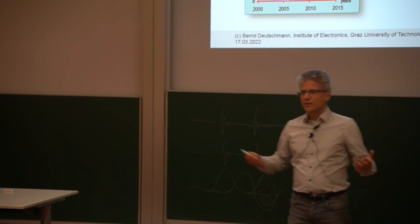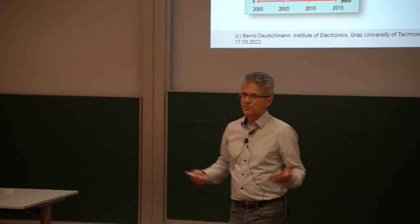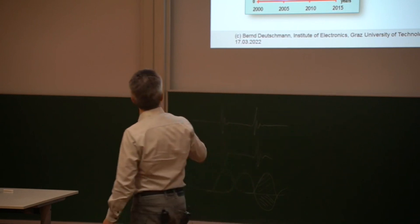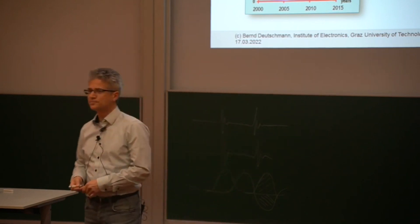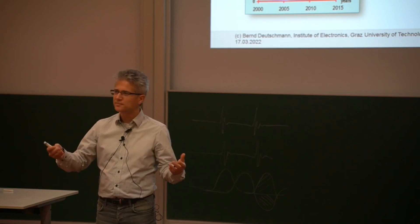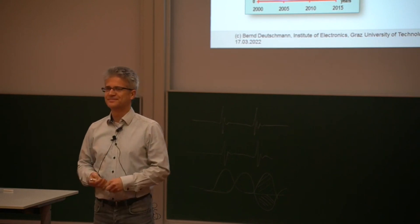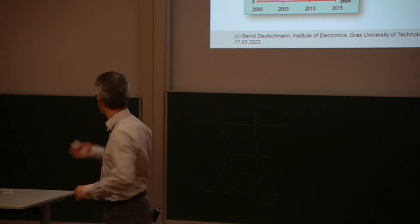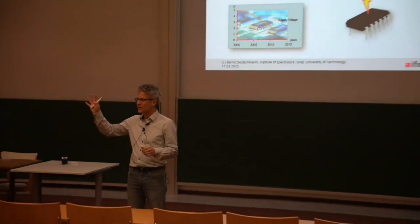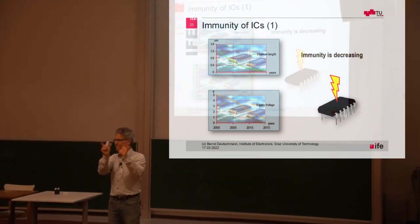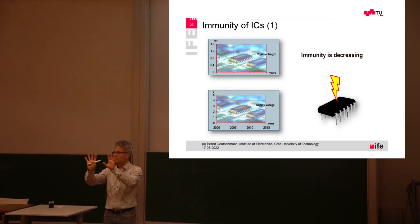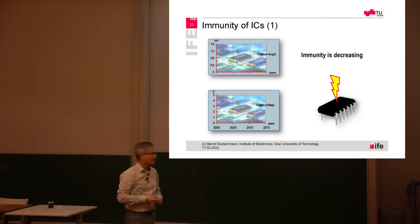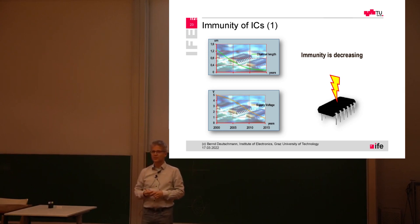So why is immunity important, or why is it getting more and more important in the future? Well, also pretty obvious — the channel length is decreasing. What's the channel length? The length of the gate of the transistor. In CMOS designs, we have a drain area, a source area, and the distance between the drain and source is usually called the channel length. So when I started IC design, we had 350 micrometers.